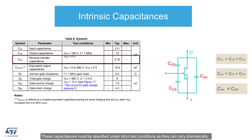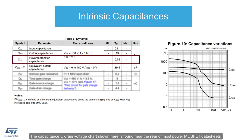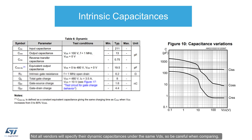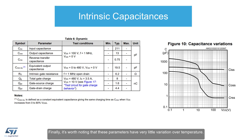These capacitances must be specified under strict test conditions as they can vary dramatically. The capacitance versus drain voltage chart shown here is found near the rear of most power MOSFET datasheets to help the designer understand the dynamics of these parameters. Not all vendors will specify their dynamic capacitances under the same VDS, so be careful when comparing. Finally, it's worth noting that these parameters have very little variation over temperature.